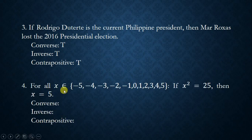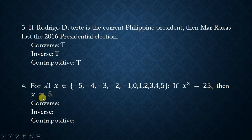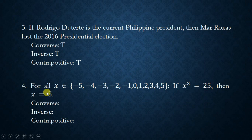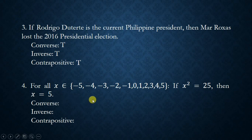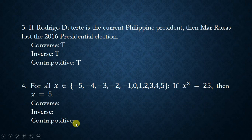Number four: for all x in the set {−5, −4, −3, −2, −1, 0, 1, 2, 3, 4, 5}, if x² = 25 then x = 5. This conditional statement involves open sentences P(x) and Q(x). The truth set for P(x) is {−5, 5} while for Q(x) it is {5}. Since P is not a subset of Q, the conditional statement is false, the contrapositive is also false, while the inverse and converse are both true.